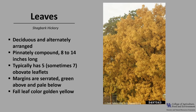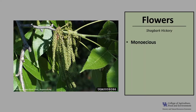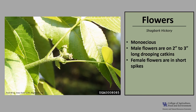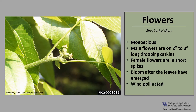Fall leaf color is an attractive golden yellow to golden yellow brown. The bark and the fall color make it an attractive specimen tree for large landscapes. Shagbark Hickory is monoecious, meaning a tree will have both male and female flowers. The male flowers are on two to three inch long drooping catkins in the axils of the previous season's leaves, and the female flowers are in short spikes in clusters at the end of the branches. The flowers bloom in the spring after the leaves have emerged and are nearly full sized, and the flowers are wind pollinated.